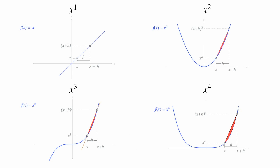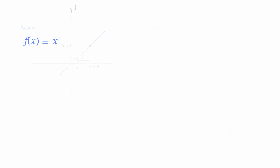So imagine we have a function, x to the first power. I'm going to graph this, and I'll put x on the x-axis and y on the y-axis, and the graph looks like this. It's a straight line.